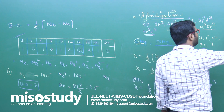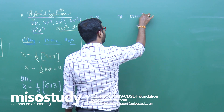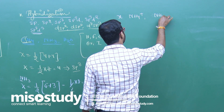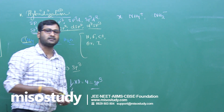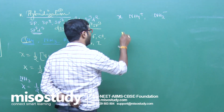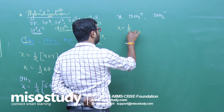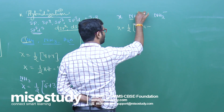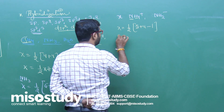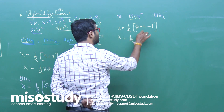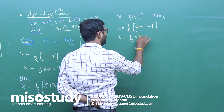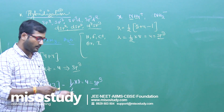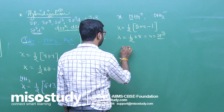If anyone asks you to find the hybridization of NH4+ and NH2−, here is what to do. For NH4+, there is a positive charge: x = 1/2 × (valence electrons of nitrogen + monovalent atoms − total positive charge) = 1/2 × (5 + 4 − 1) = 1/2 × 8 = 4. So hybridization of NH4+ is sp³.